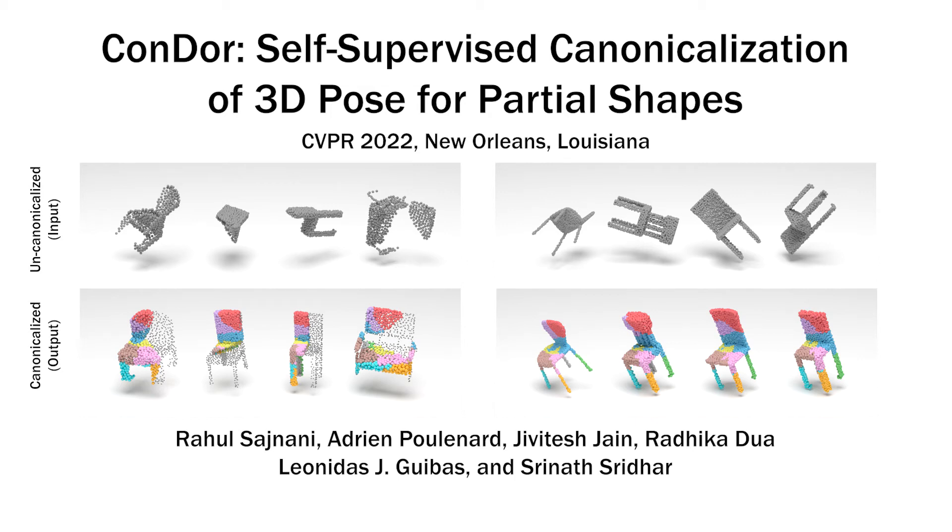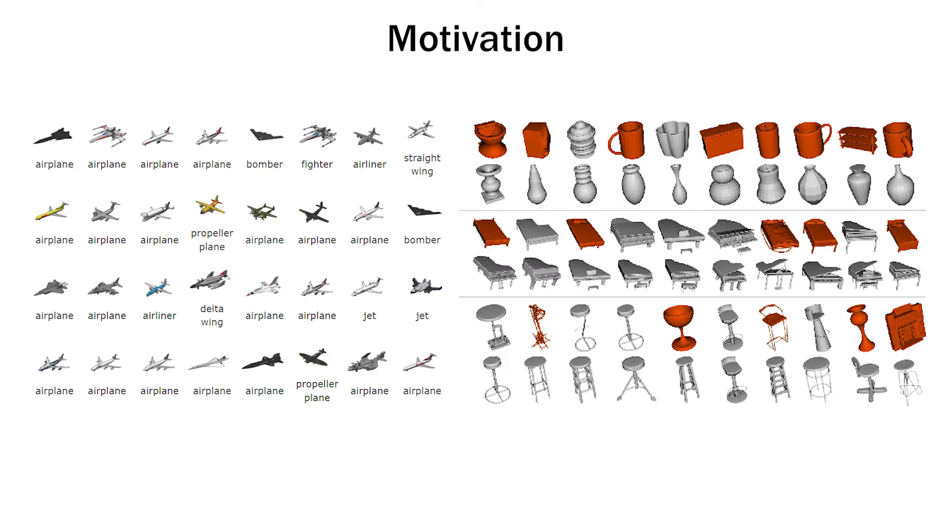Self-supervised canonicalization of 3D pose for partial shapes. Progress in 3D object understanding has relied on manually canonicalized shape datasets such as ShapeNet and ModelNet40 that contain shapes with consistent position and orientation.